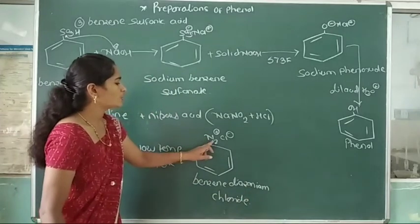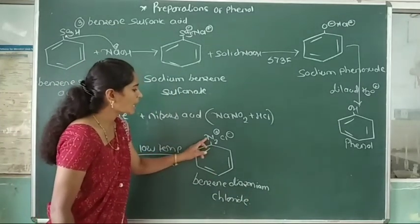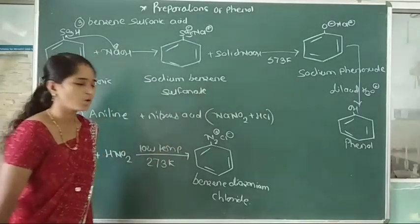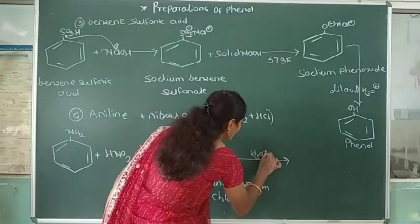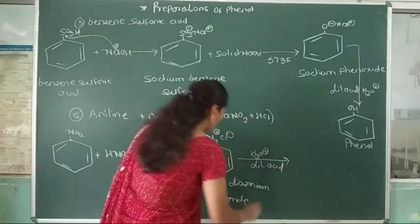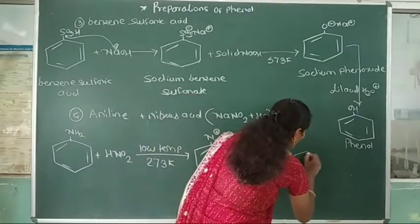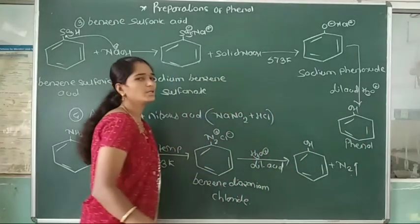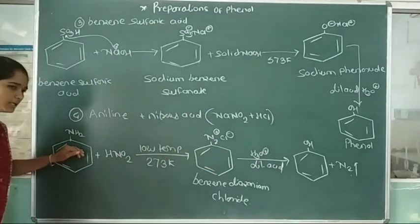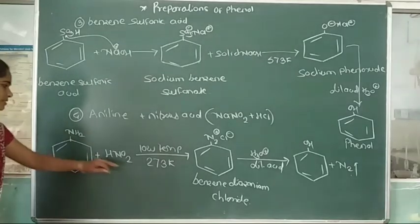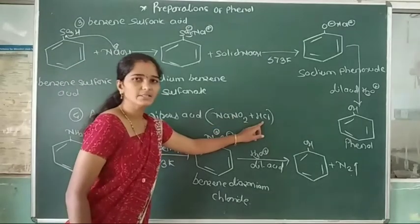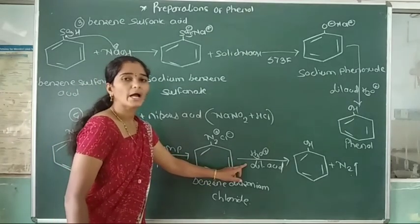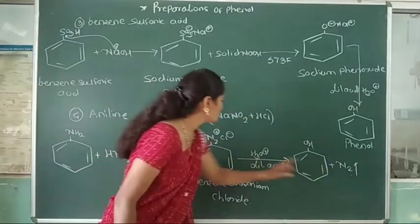After reaction of aniline with nitrous acid at lower temperature, benzene diazonium chloride is formed. This benzene diazonium chloride then undergoes hydrolysis in the presence of dilute acid, converting it into phenol with the evolution of N₂ gas. This is the fourth method for the preparation of phenol.